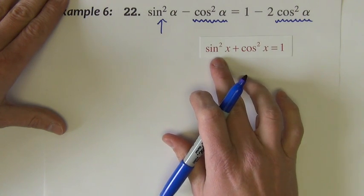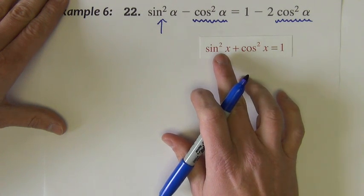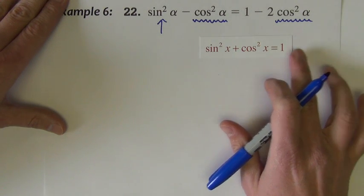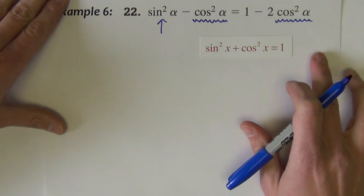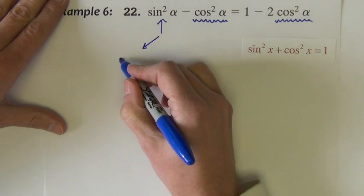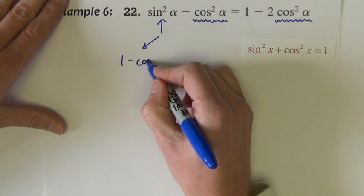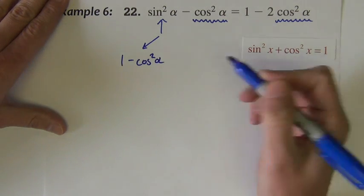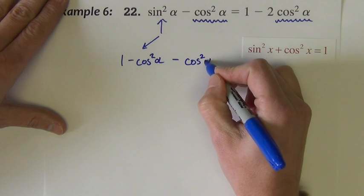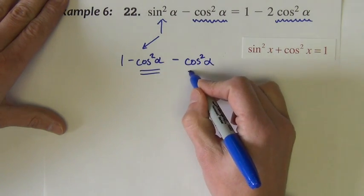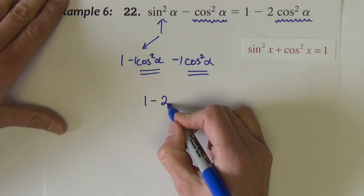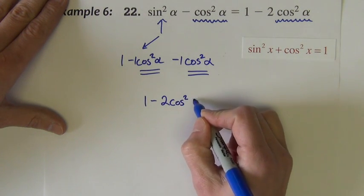Sine squared, we just saw it on the last problem actually. Sine squared is the same as 1 minus cosine squared. Sine squared right here is 1 minus cosine squared, we're using alphas this time, minus this other term is cosine squared alpha. These two are now like terms, so it's 1 and 1, I combine them to 1 minus 2 cosine squared alpha.